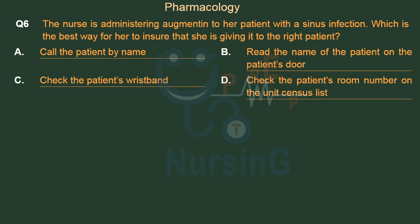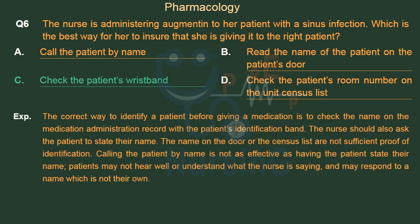The right answer is Option C — check the patient's wristband. The correct way to identify a patient before giving a medication is to check the name on the medication administration record with the patient's identification band. The nurse should also ask the patient to state their name. The name on the door or the census list are not sufficient proof of identification. Calling the patient by name is not as effective as having the patient state their name, as patients may not hear well and may respond to a name that is not their own.